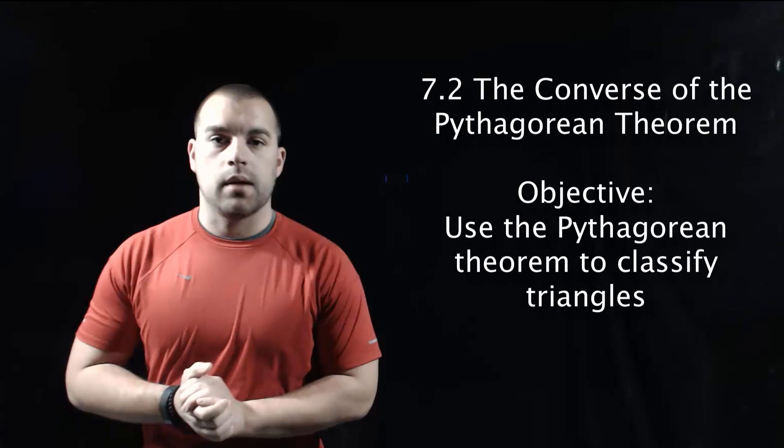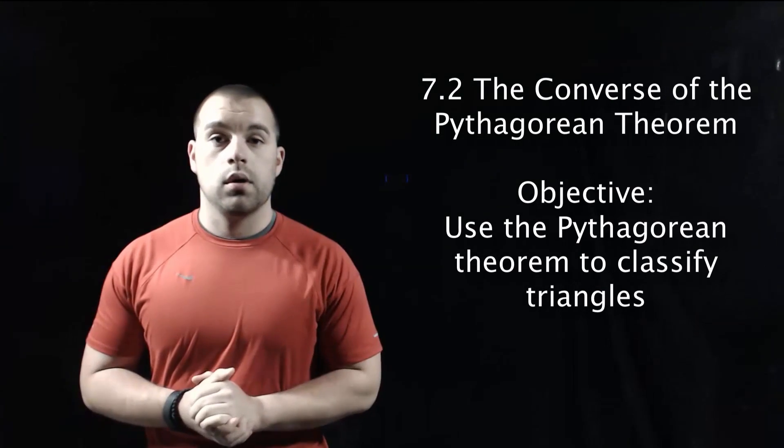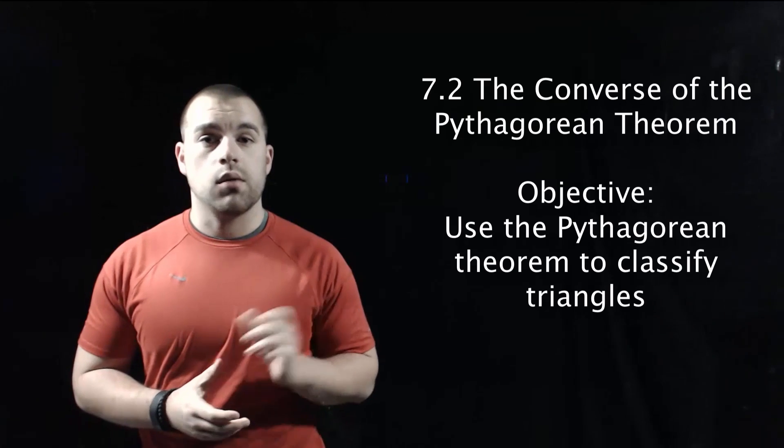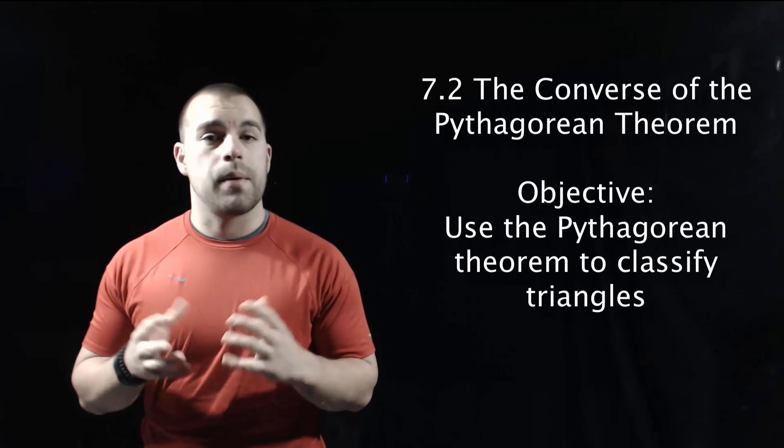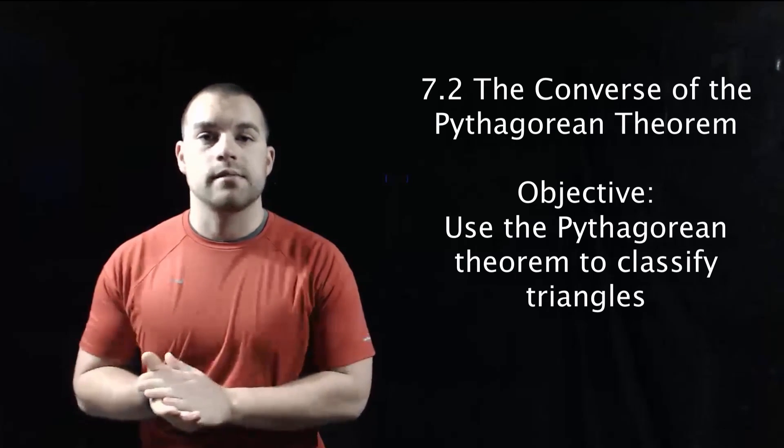Hey guys, Mr. Bakkerberg here. In this video we're going to use the Pythagorean Theorem to help us classify some triangles. Along with using the Pythagorean Theorem to find the missing side of a right triangle, we can also use it to prove or show that a triangle is a right triangle.